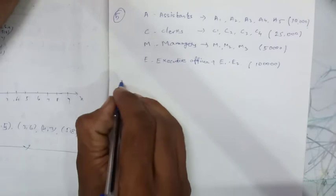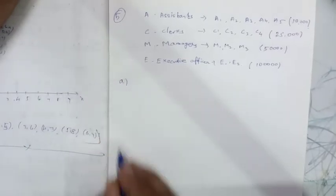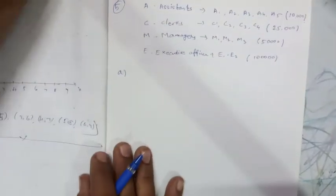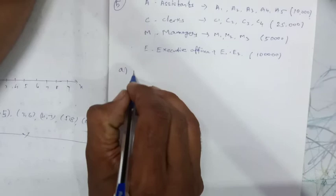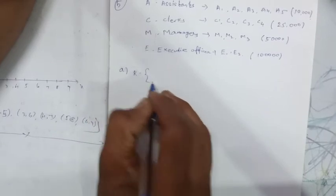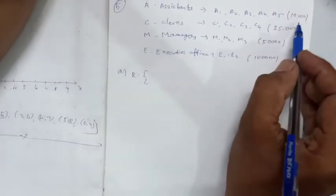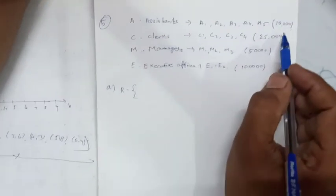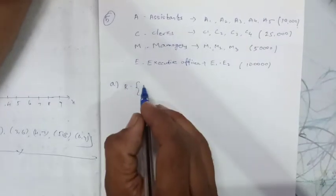The first part is the set of ordered pairs — that is the relation. So one element of the pair is the salary and the other is the employee or officer. This gives us the ordered pair representation of the relation.